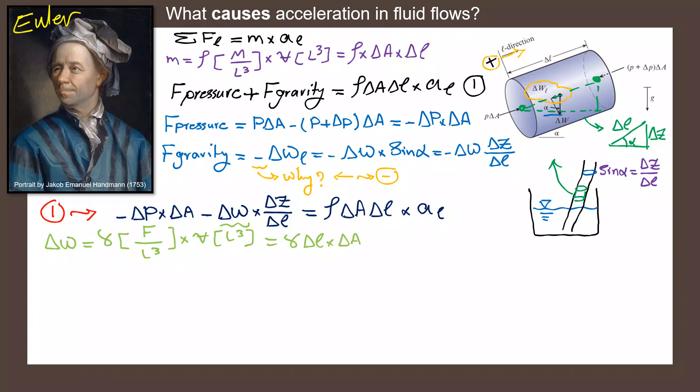So if I write that equation again, and replacing ΔW in the equation, it would be negative ΔP times ΔA, negative γΔL times ΔA times ΔZ/ΔL equals ρΔAΔL times acceleration in direction of L. I can simplify this equation by simply crossing ΔA's. And then I'm going to divide both sides of the equation by ΔL.